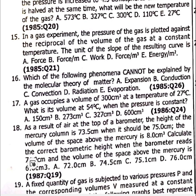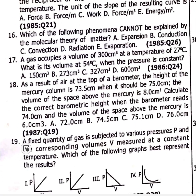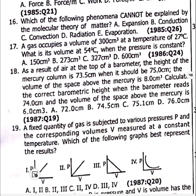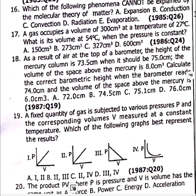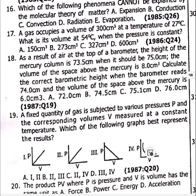Questions 17 and 18 involve calculations. Question 19: A fixed quantity of gas is subjected to various pressures P and the corresponding volume V measured at constant temperature. Which graph best represents the result? Question 19 is option C — draw this graph showing fixed quantity with varying pressure and corresponding volume at constant temperature.